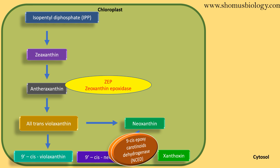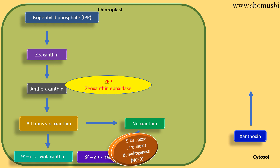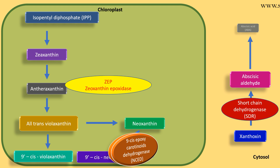Xanthoxin is the form that the plant takes into the cytosol for further steps. In the cytoplasm, xanthoxin is converted to abscisic aldehyde by the enzyme short-chain dehydrogenase/reductase (SDR). Then abscisic aldehyde is converted into the final form of abscisic acid by the enzyme abscisic aldehyde oxidase (AAO). This is how ultimately we get abscisic acid from the basic precursors pyruvate and glyceraldehyde 3-phosphate in plant cells.